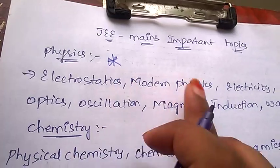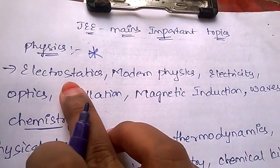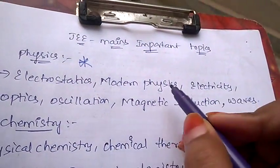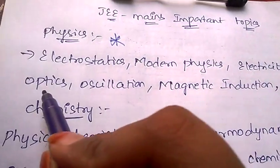Now let's see what are the important topics for physics. First topic is electrostatics, next modern physics, electricity, optics, oscillation, magnetic induction, and waves.